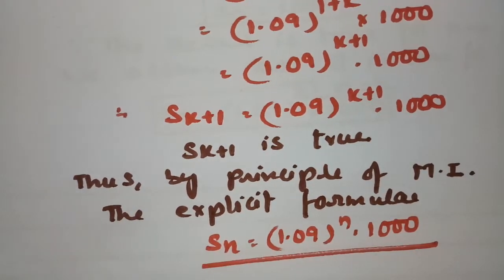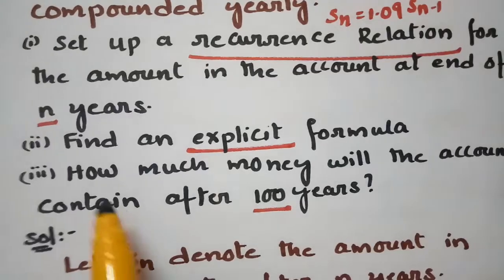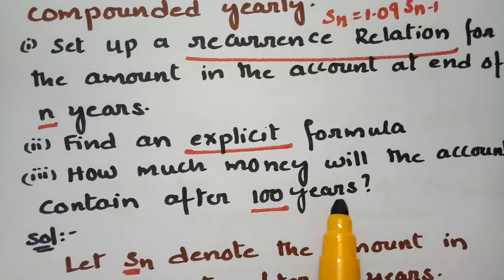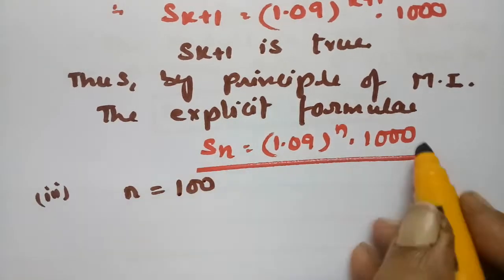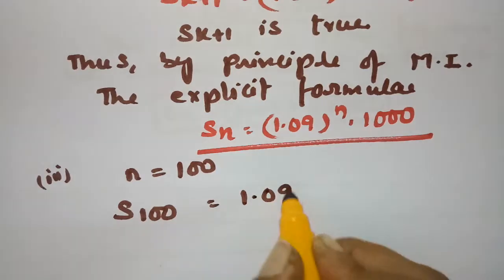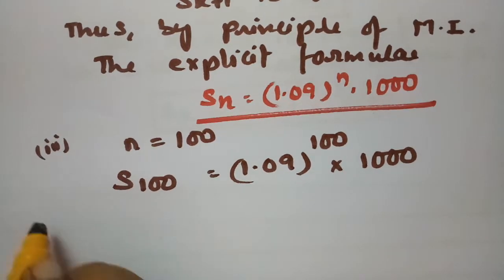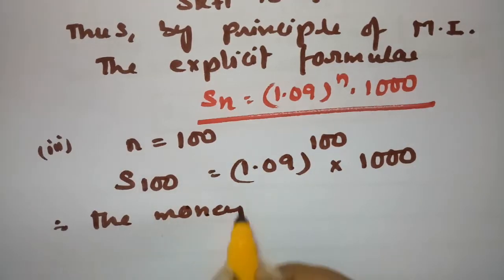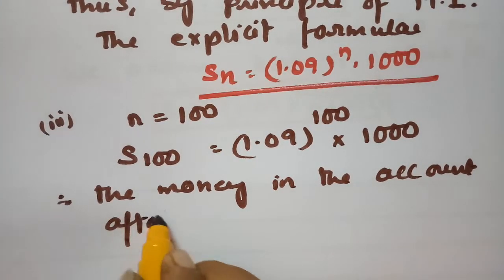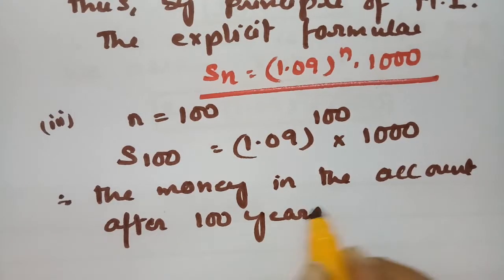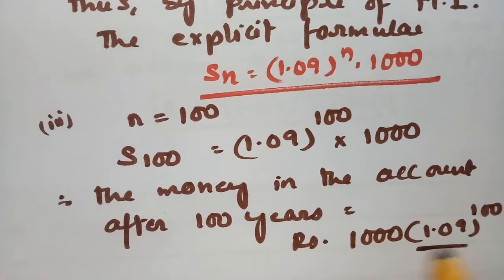The third question asks how much money the account will contain after 100 years. Here n = 100. Substituting into the explicit formula: S100 = 1.09^100 × 1000. Therefore the money in the account after 100 years is 1000 × 1.09^100 rupees.